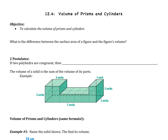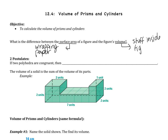The first thing we should talk about is the difference between the surface area of a figure and the volume of a figure. Surface area is what we've done so far — it's everything on the outside, like the wrapping paper. The volume is actually the stuff inside the figure, whereas the surface area is just the stuff around the outside.